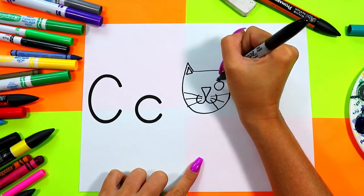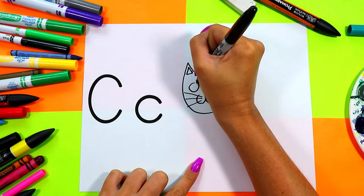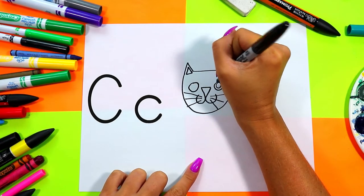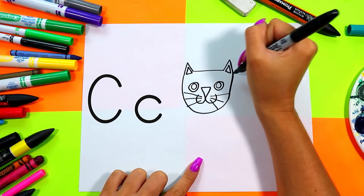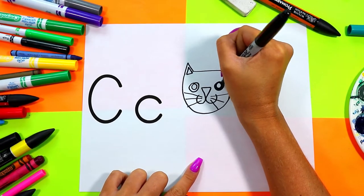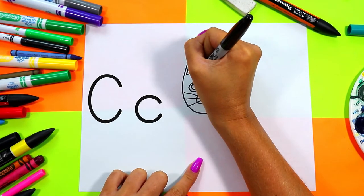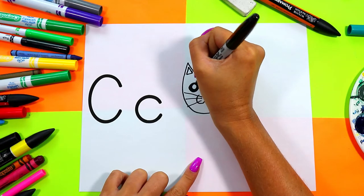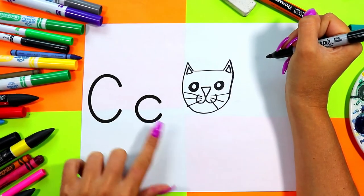Draw a circle on each side to make cat's eyes. In each circle draw a smaller circle and color in the dark of the eyes to finish cat's eyes. The word cat starts with the letter C.